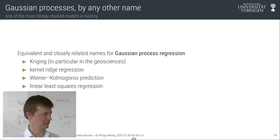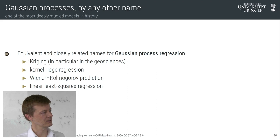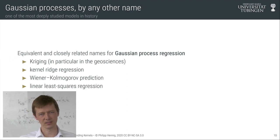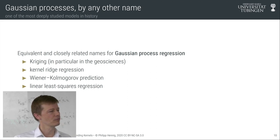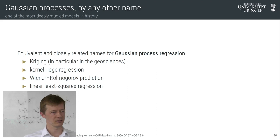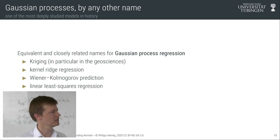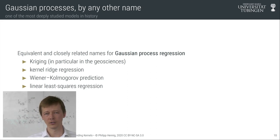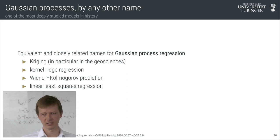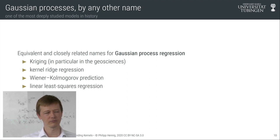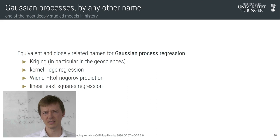Gaussian process regression is known in other communities under other names like Kriging — mostly due to a guy called Matheron, but Krige was a geoscientist in South Africa who came up with a very similar framework for prospecting for gold. You've also maybe heard of kernel ridge regression, if you've taken a statistical machine learning class, or from the signal processing or control perspective, you might have heard of Wiener-Kolmogorov prediction, or in fact of linear least squares regression. That final term is probably the best description of what's really going on here.